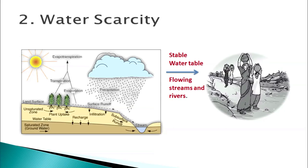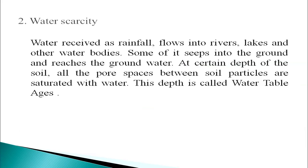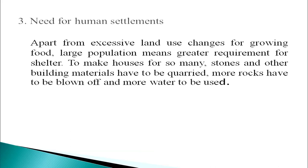Next is water scarcity. Water received as rainfall flows into rivers, lakes and other water bodies. Some of it seeps into the underground and reaches the groundwater. At certain depths of the soil, all the pore spaces between soil particles are saturated with water — this depth is called the water table. The water table may remain stable if the water drawn from the groundwater is replenished by seepage of rainwater, but if water withdrawal exceeds the rate of replenishment, the water table keeps receding and wells dry out. In many areas, excessive withdrawal has depleted groundwater resources, causing acute water scarcity.